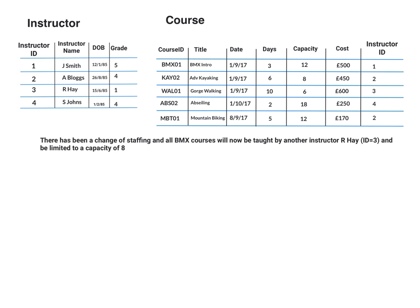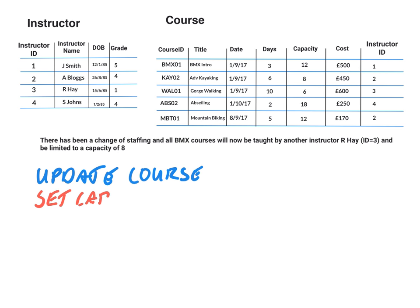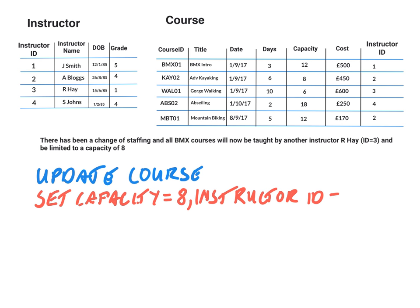As we have done before, we're going to specify first which table to update — the table called course. We're going to set the capacity equal to 8 and also the instructor ID equals 3. The last part is which records we want to update — we'll assume all BMX courses have the same title, so we're going to say where title equals 'BMX'.